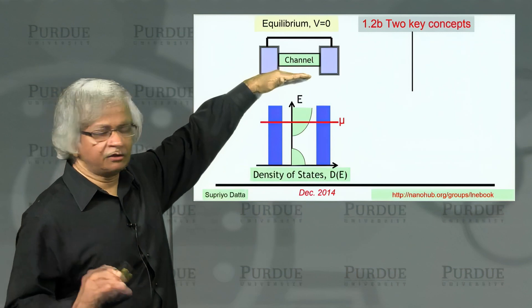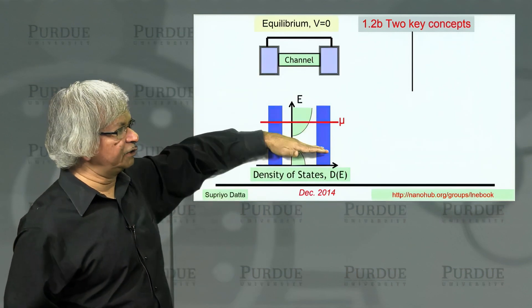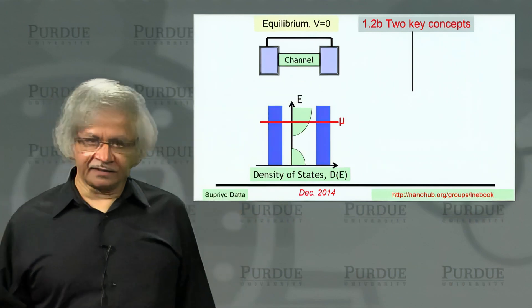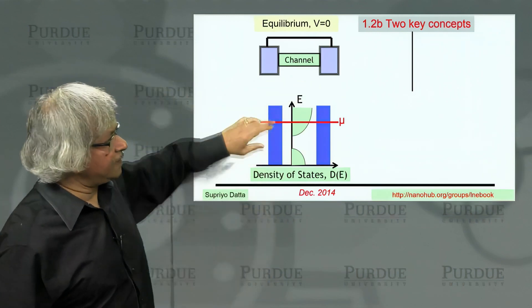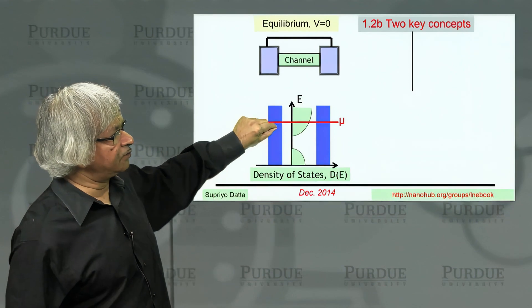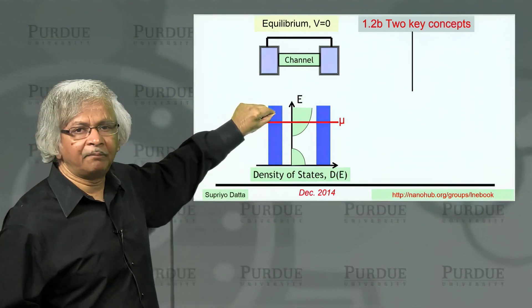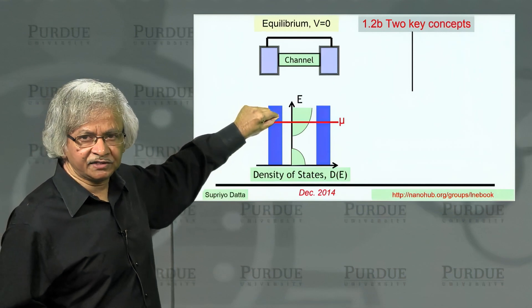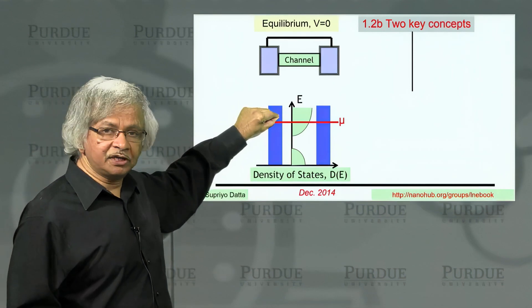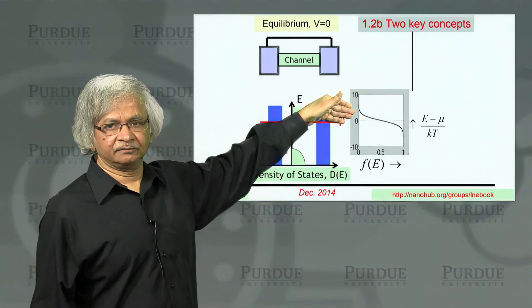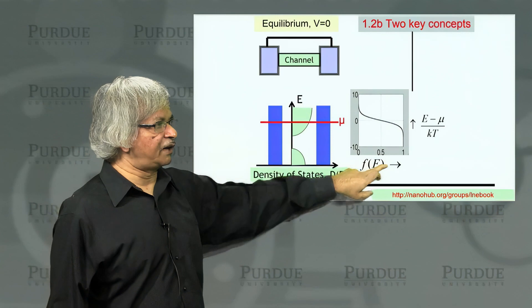If you're at zero temperature, everything below it would be filled, everything above it would be empty. What if I raise the temperature? Then some of these electrons from down here will have enough thermal energy to actually jump up and occupy these higher states. And the distribution at equilibrium will be given by something called this Fermi function. So what I've plotted here is this Fermi function.